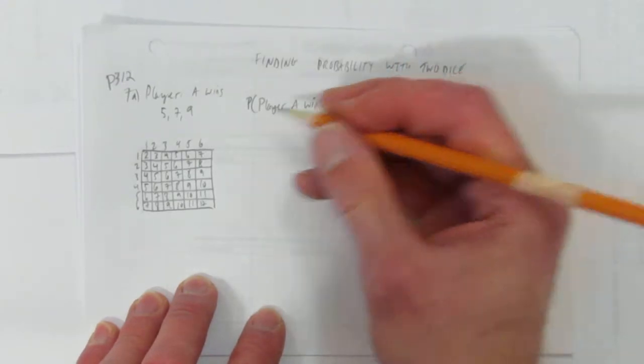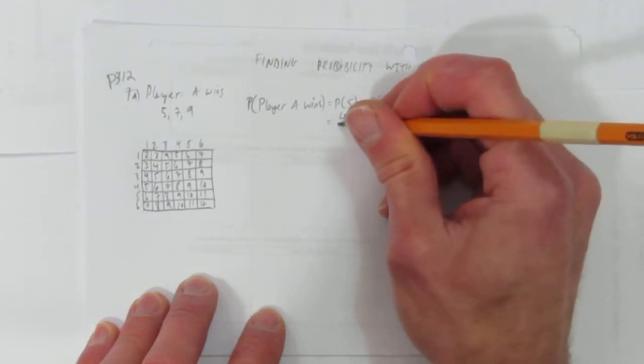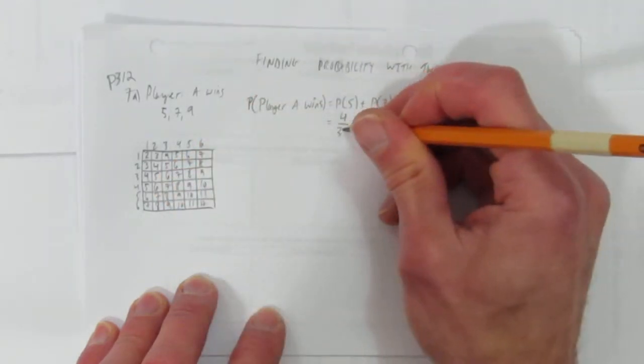What's the probability of getting a 5? Well, there's 1, 2, 3, 4 ways to do that out of the total 36.